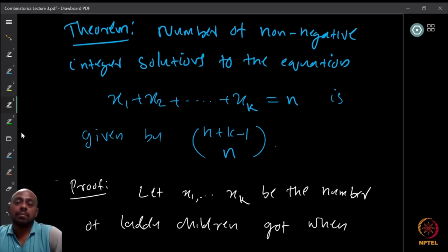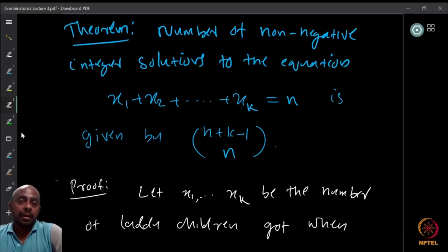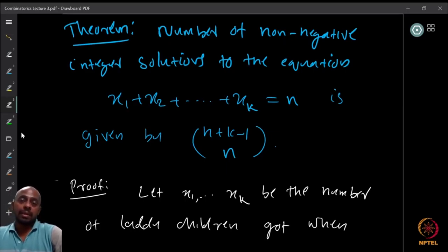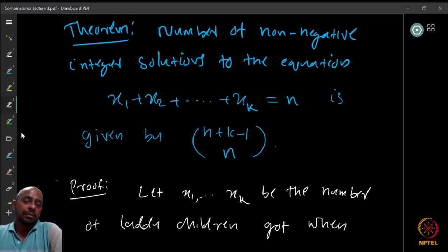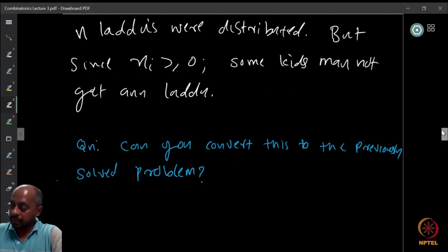This means everybody gets at least one — x_i is strictly greater than zero. For every solution to the weak composition (x_i ≥ 0), we have a corresponding solution where x_i ≥ 1, simply by adding 1 to each x_i. On the right-hand side, instead of n we have n+k, because we added k extra laddus.